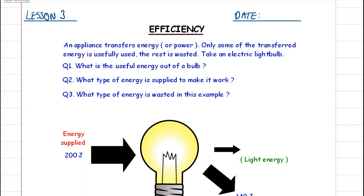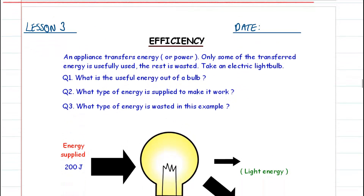Welcome back to Year 10. This is lesson 3 of Double Science Physics: Generating Electricity. In lesson 3 we're going to learn about the concept of efficiency. Start by writing down lesson 3 at the top of page 13. The title is already there — efficiency, underlined, and today's date.